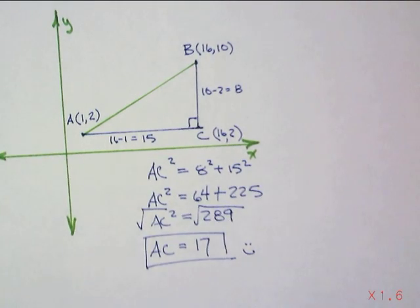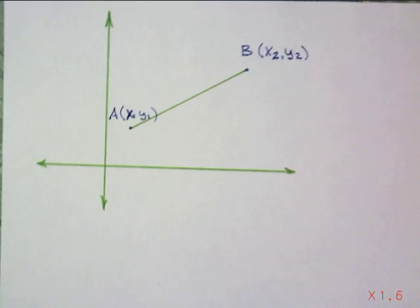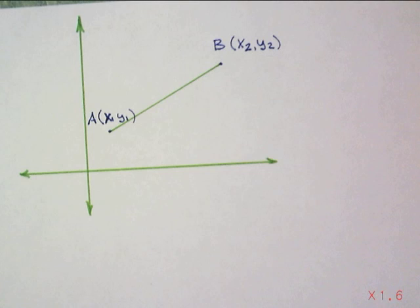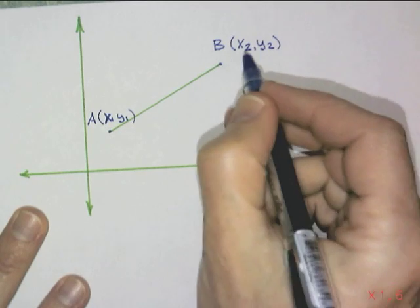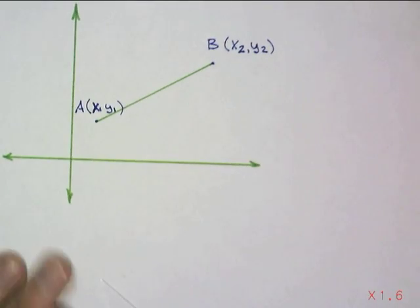Well, maybe we should look at this in a more generalized fashion. So, here's my A and B. And A has coordinates x₁, y₁. B has coordinates x₂, y₂. Once again, we're going to do it in the same fashion.